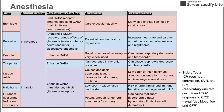Next is propofol, which has the same mechanism of action as etomidate. It's intravenous as well, and it enhances GABA. Propofol is particularly attractive because it has rapid onset and rapid recovery. It's widely used because of this — it can knock people out quickly and they can recover very quickly. Disadvantages are that it causes respiratory depression and bradycardia — it slows your lungs and your heart.